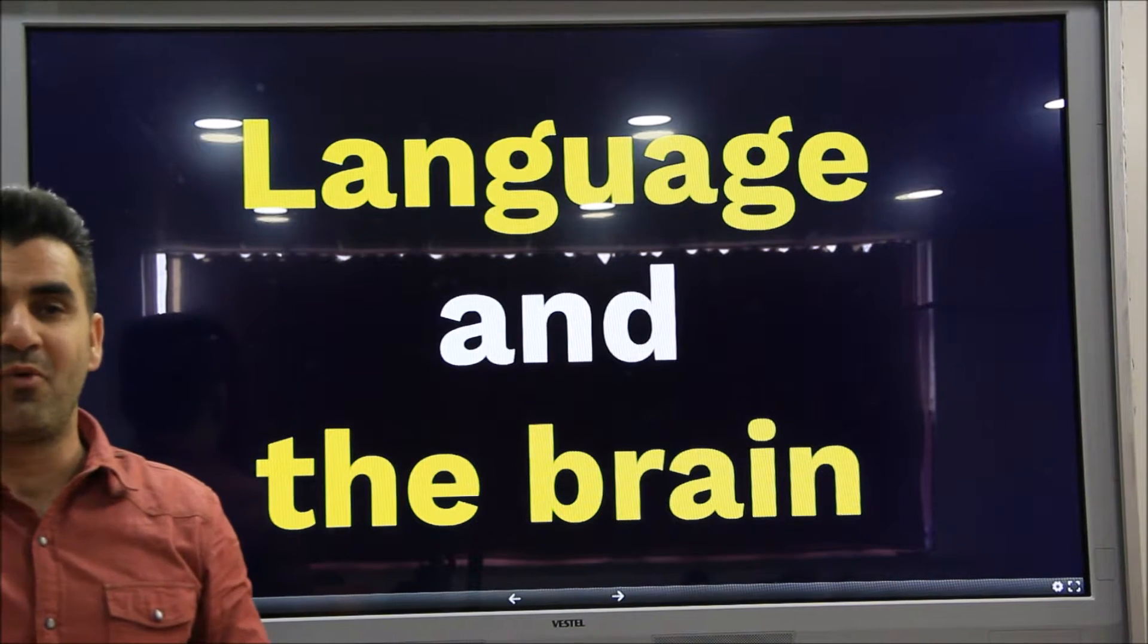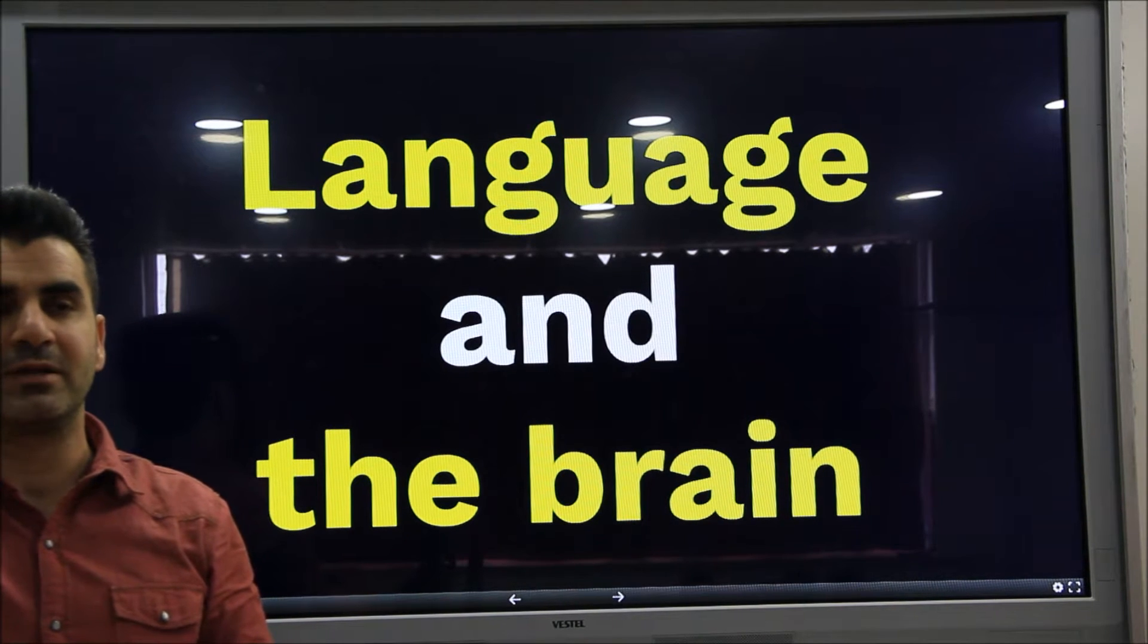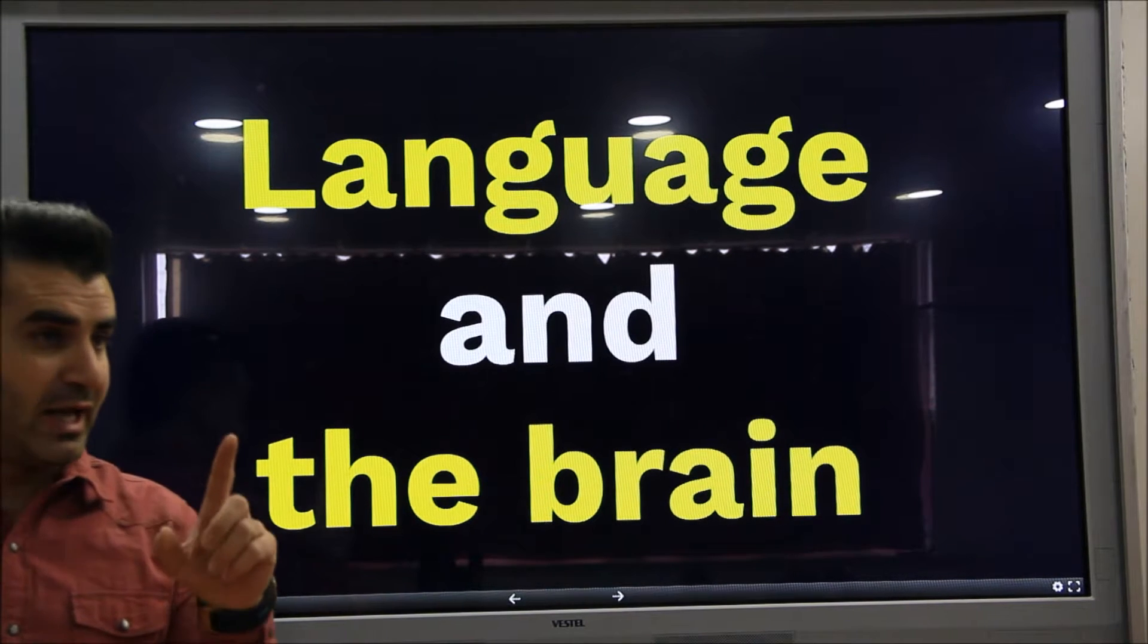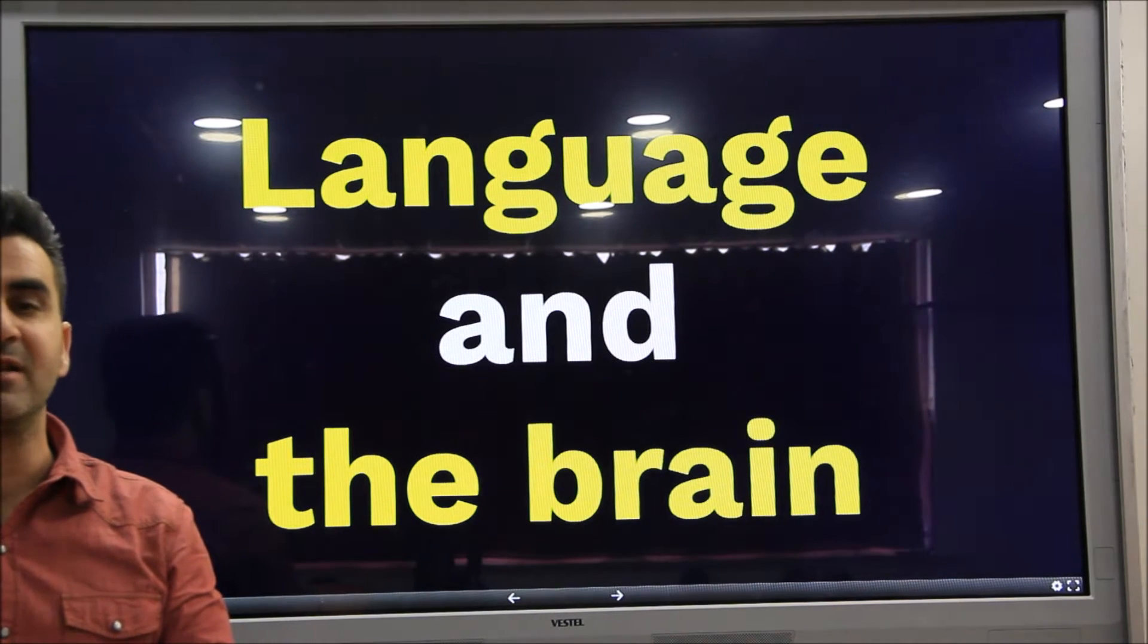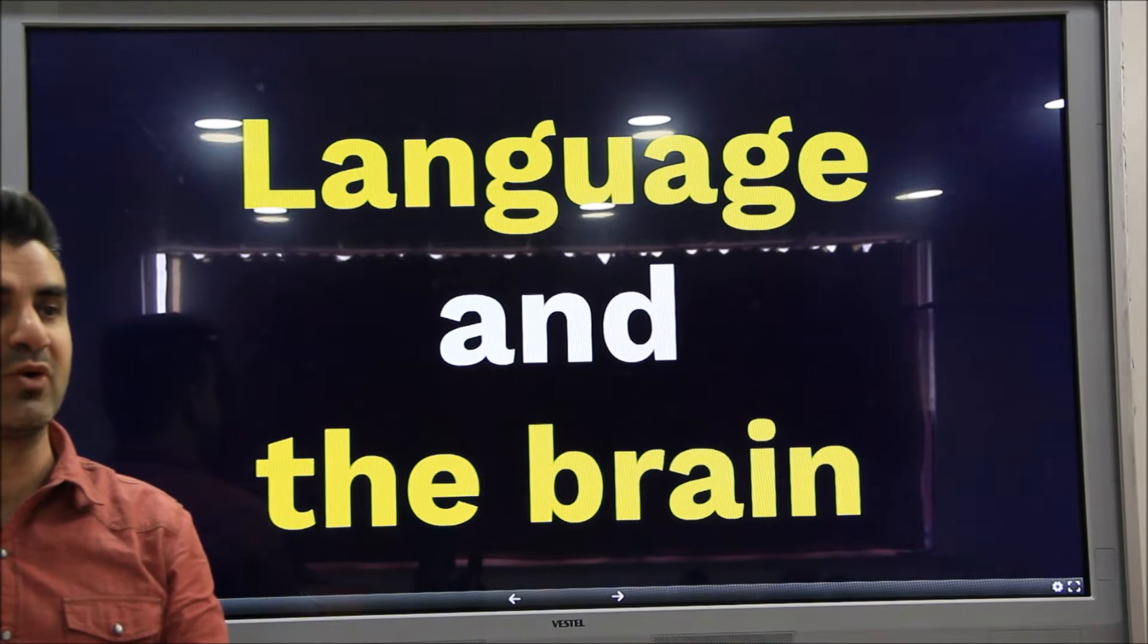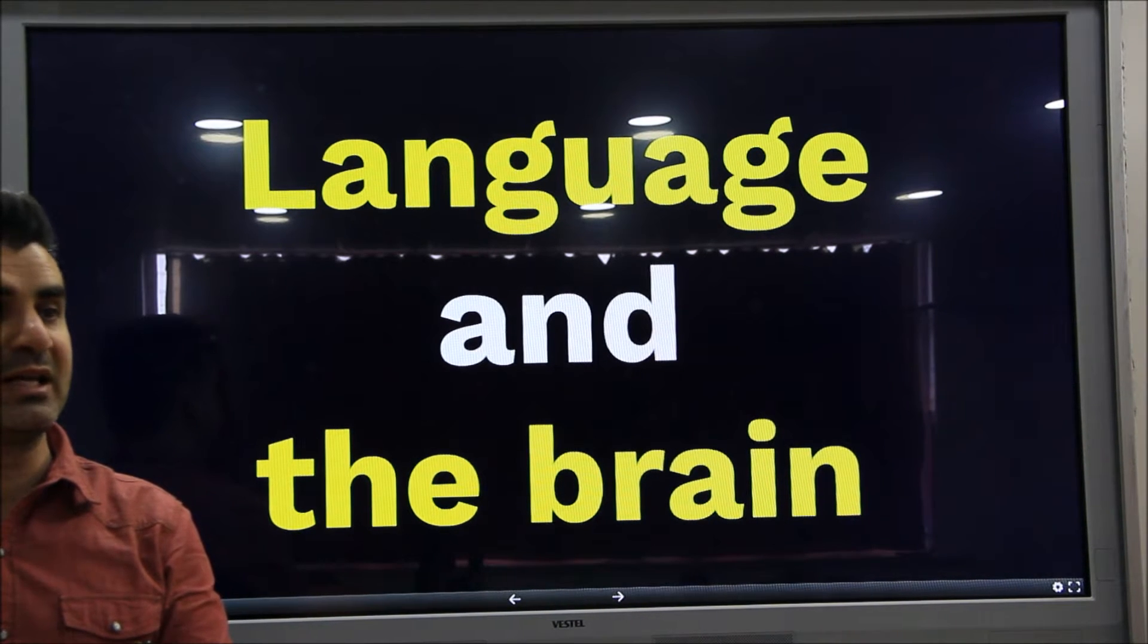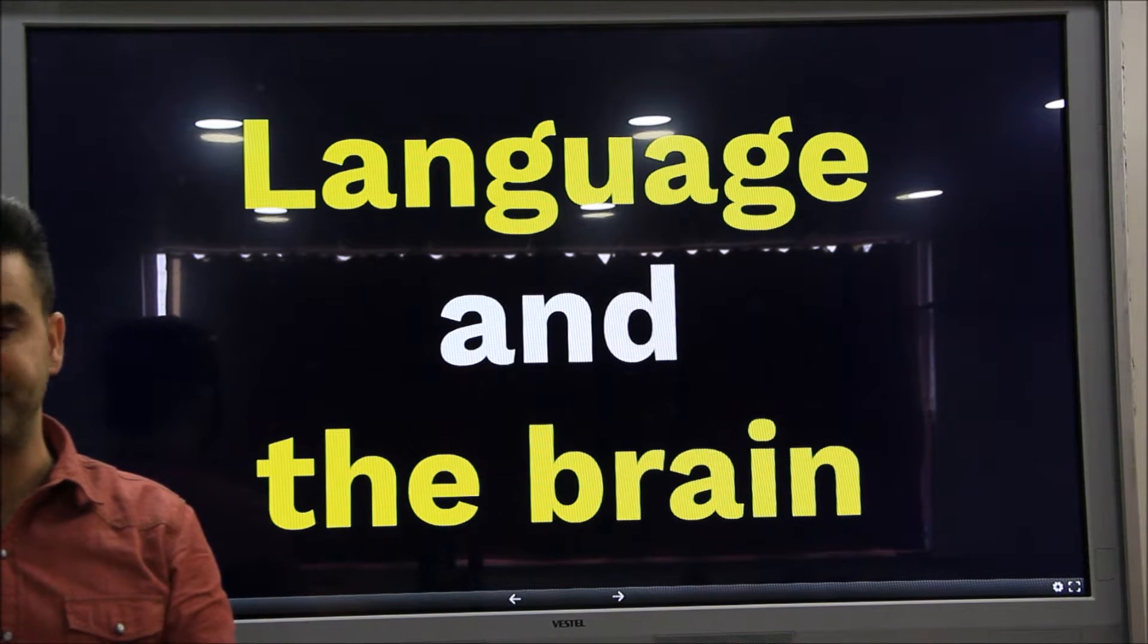Now we said while producing language we use our brain. But in which part of brain do we produce our language? Where does this production take place? We're going to investigate this. We're going to analyze the relationship between comprehending and producing language and brain activity.